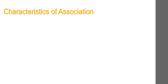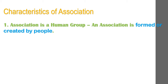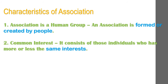Characteristics of association. Number one: association is a human group. An association is formed or created by people; it is a social group. Without people there can be no association. All groups are not associations because an association is an organized group — an unorganized group like a crowd or mob cannot be an association. Number two: common interest. An association is not merely a collection of individuals; it consists of those individuals who have more or less the same interest. Those with political interest may join political associations, those with religious interest may join religious associations, and those with sports interest may join sports associations.